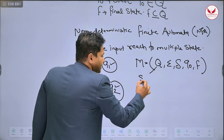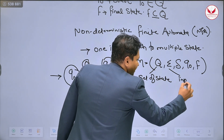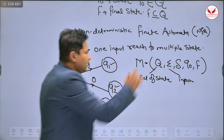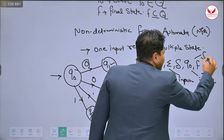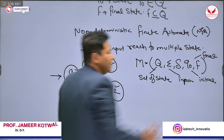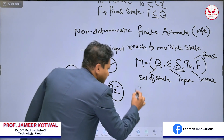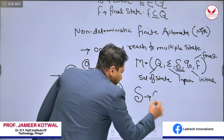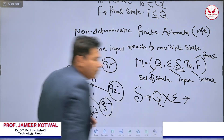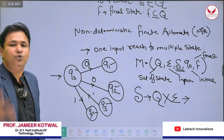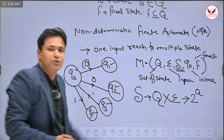For NFA, the tuple representation is the same 5 tuples as DFA: Q is the set of states, sigma is the input, Q0 is the initial state, and F is the final state. The difference is in the transition function. In NFA, in a state you process the input and reach multiple states — represented as the power set, that is 2 raised to Q.